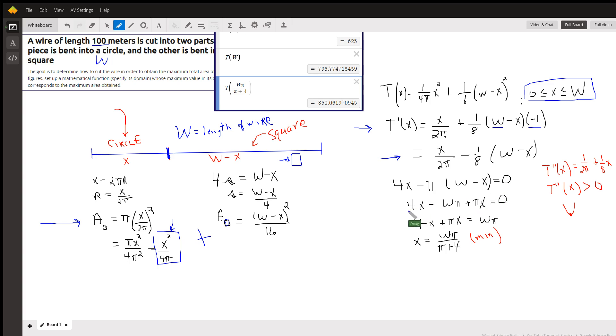If you solve that for x, you factor out an x, so you get π plus 4, so x equals wπ divided by π plus 4.